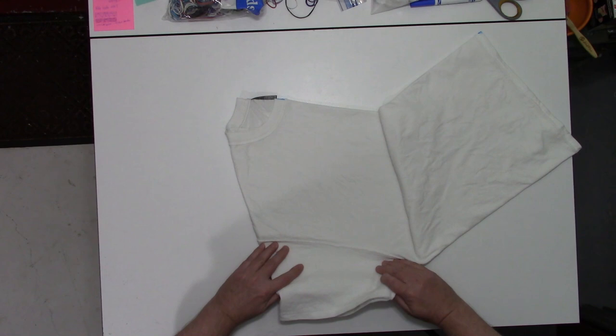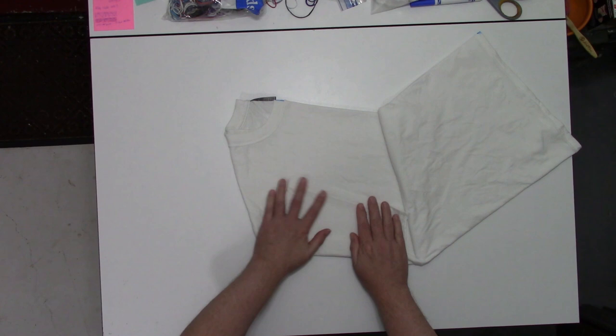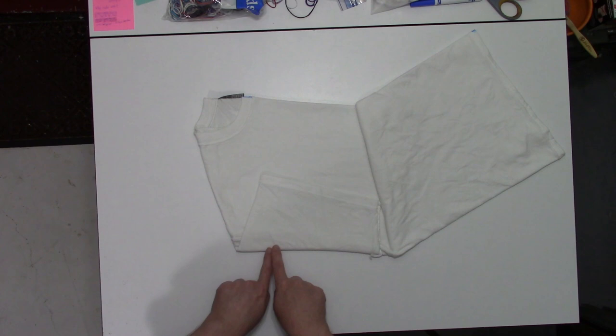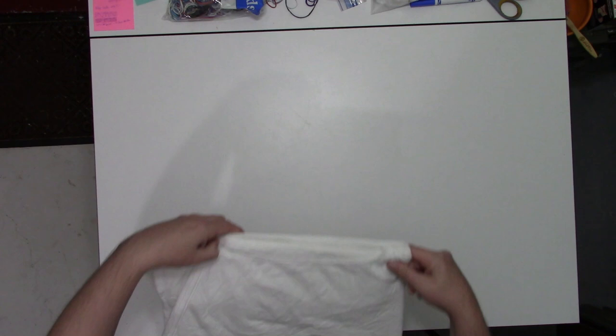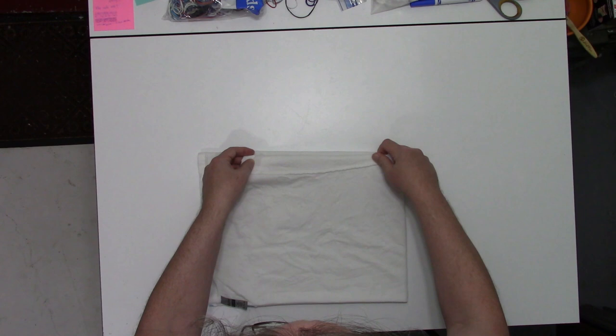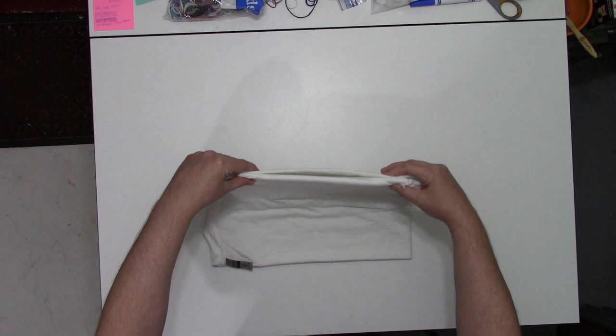I'm going to take the arms and fold those inside as well. It's kind of a toss up how these go, as far as lining it up. I generally try to line this edge of the sleeve with this. I might have to pull that out a little. And that right there is pretty good.